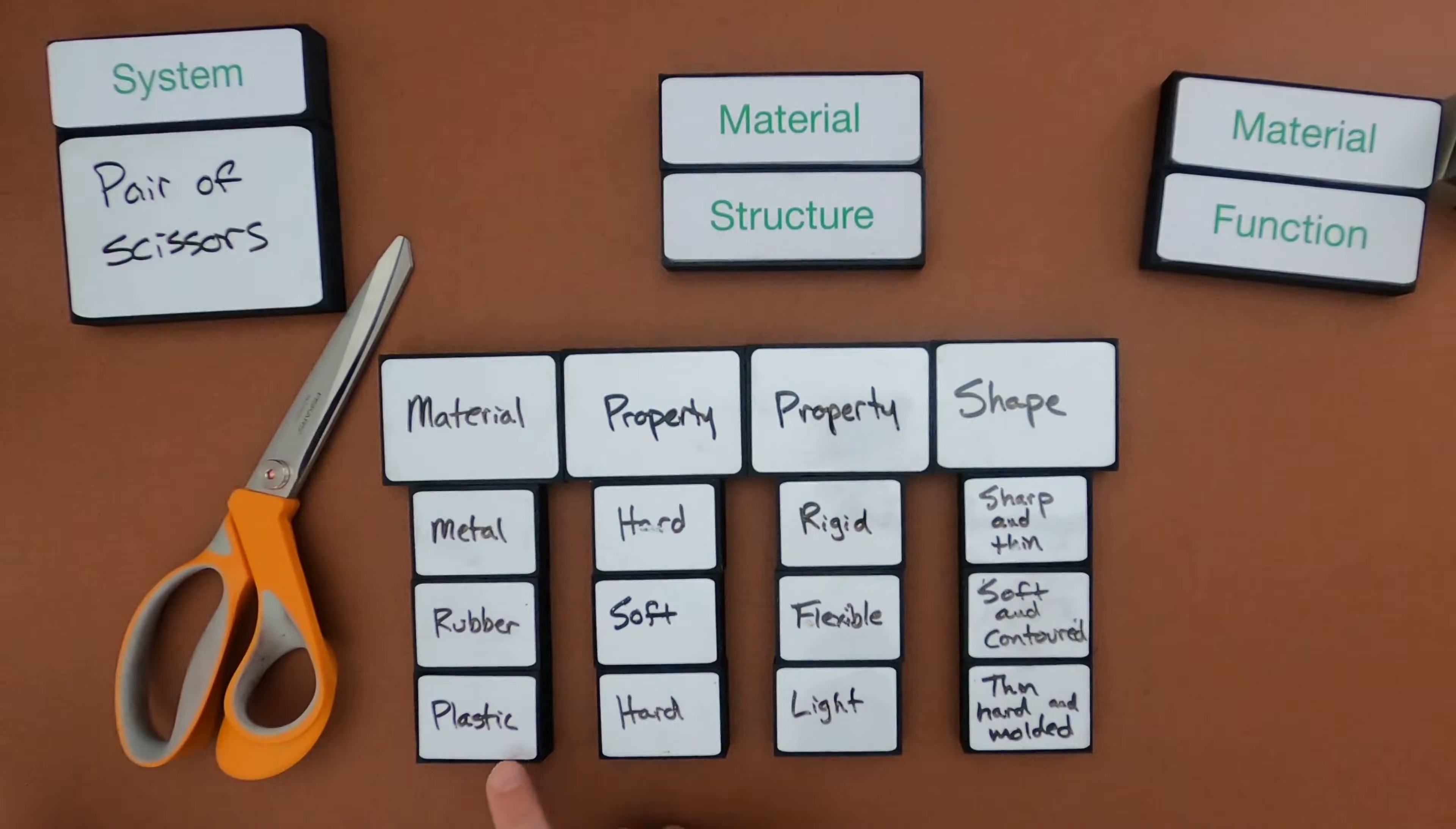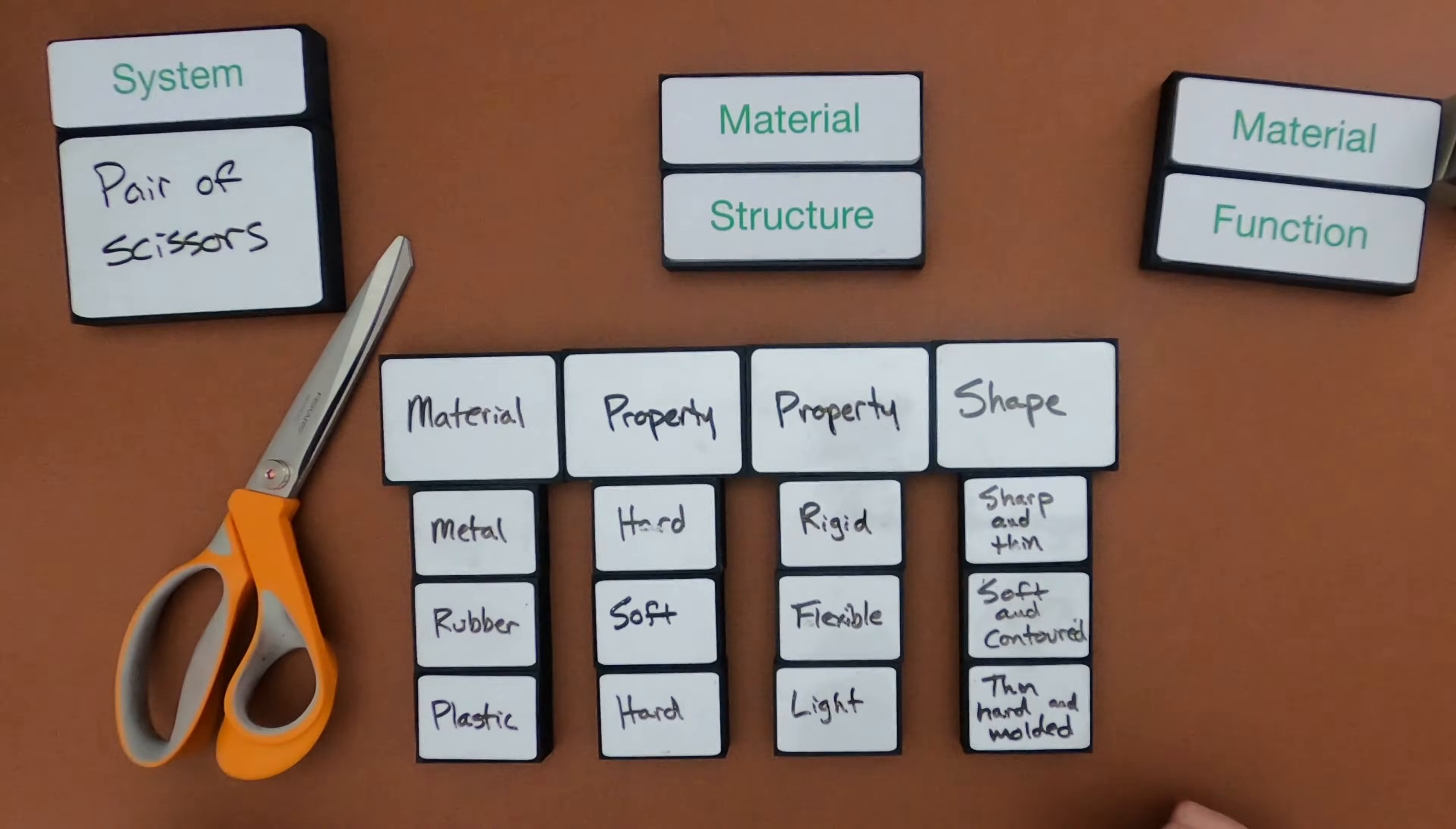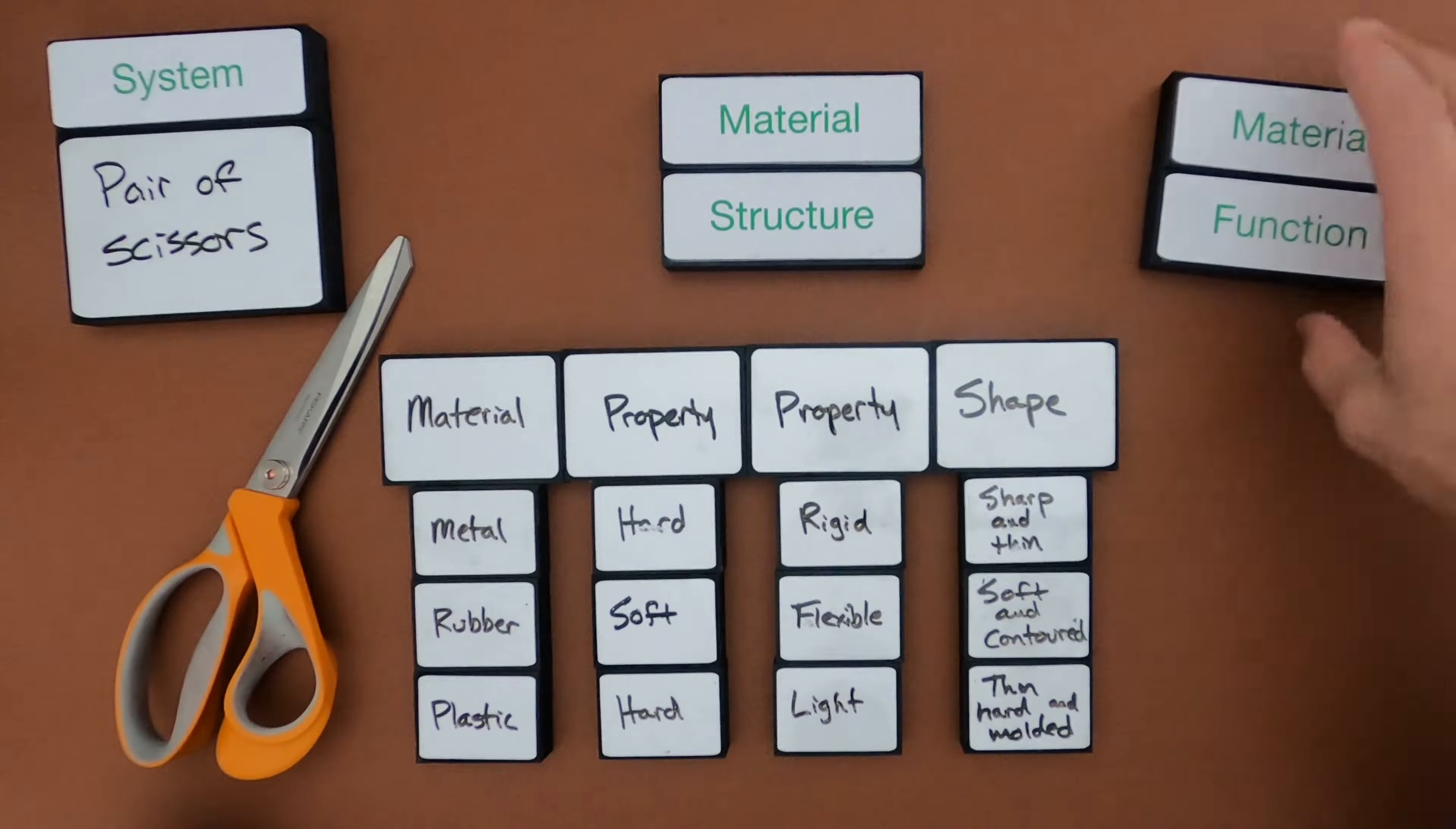I said the rubber is soft and it can be contoured so that it fits your hand. And then finally the plastic can be light, it also can be hard so it can connect to the metal itself. And so when you're thinking about material structure, not only what are the properties of it, but how can the engineers or how can the manufacturers make it fit the actual function.